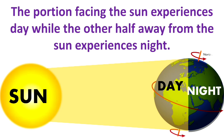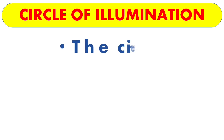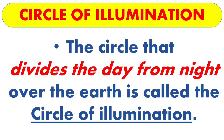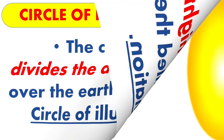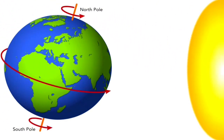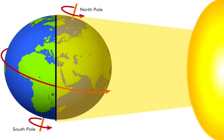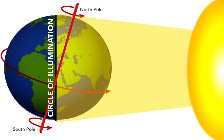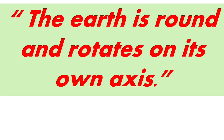Life would not have been possible in such extreme conditions. Next is the circle of illumination. The circle that divides the day from night over the earth is called the circle of illumination. You can see this clearly in the picture. This circle does not coincide with the axis, as you can see here.